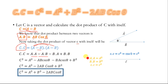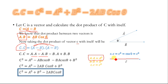Now, a dot a is equal to a squared. Why? Because when we take the dot product of a vector with itself — for example vector C with itself — it becomes c times c times cos θ, but the angle θ between them is equal to 0. When θ equals 0, cos 0 equals 1, so we simply write it as c squared. Similarly, c dot c becomes c squared, and a dot a is equal to a squared.